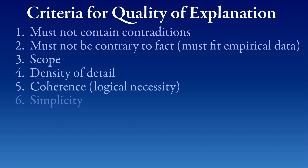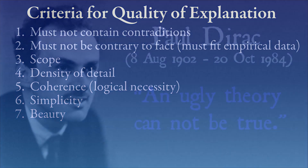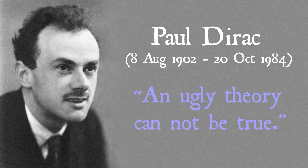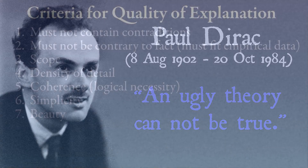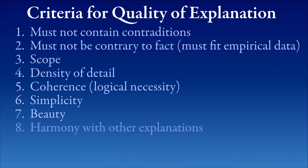Simplicity is another criterion. All else being equal, if one explanation is simpler than another, we prefer the simpler explanation. Another criterion is beauty. Scientists, on the whole, are reluctant to talk about beautiful theories, but some of them do. The most notable one was Paul Dirac, a British theorist and physicist, one of the founders of quantum mechanics. He argued that an ugly theory cannot be true — in order to be true, a theory must be beautiful. Harmony with other explanations is also an important criterion. If you have two explanations and they don't connect, they don't harmonize, then something's wrong — something's false in one or both of them.